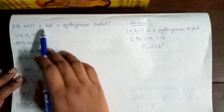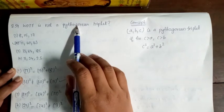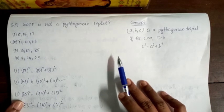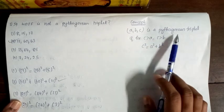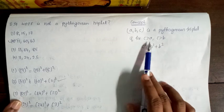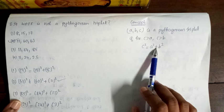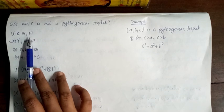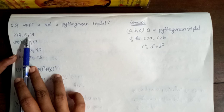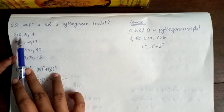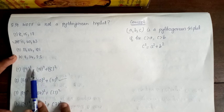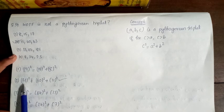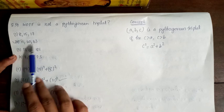Next question, 54. Which of the following is not a Pythagorean triplet? For a Pythagorean triplet, C squared equals A squared plus B squared, where C is the largest number. Checking the options: for option with 17, we check 17 squared equals 8 squared plus 15 squared. After checking, option 2 is correct — that set is not a Pythagorean triplet.